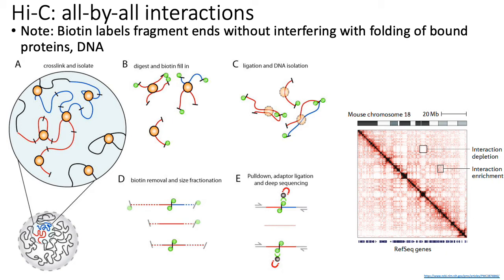Once you pull down the sequences that specifically have the biotin labels, you can ligate some sequencing adapters and then do deep sequencing, mapping your chimeric reads back to the genome to figure out which pairs of loci were interacting. The basic output of Hi-C, after doing all this mapping and filtering on the reads to make sure each read is really a chimeric read, is a plot like the one shown here on the right.